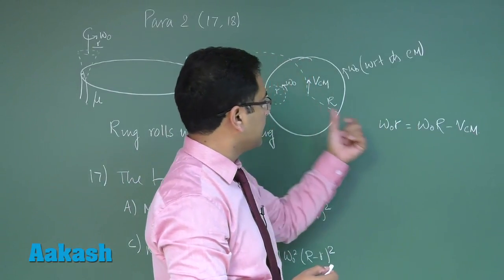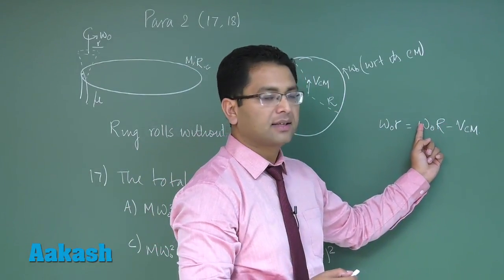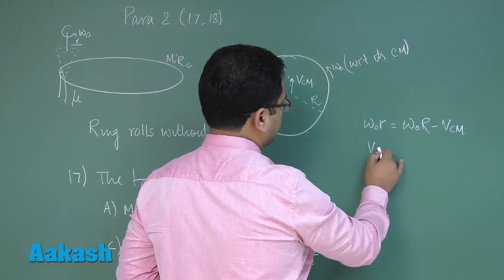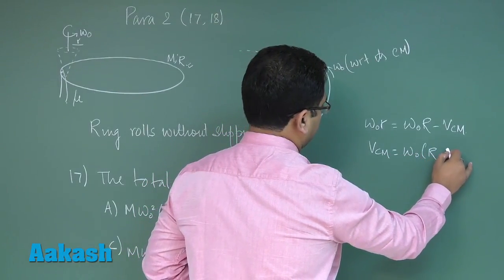So for the ring, the net velocity has been calculated: motion around the center of mass of the ring plus the velocity of the center of mass. And this now gives us a conclusion: VCM is omega naught capital R minus small r.